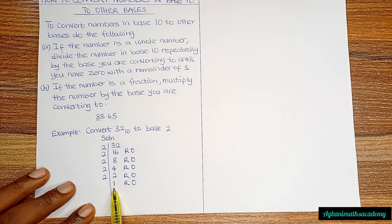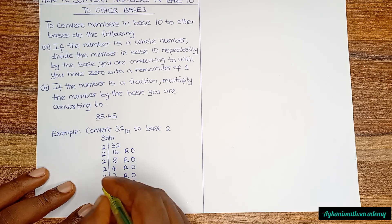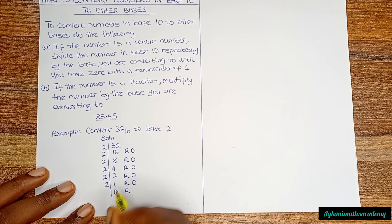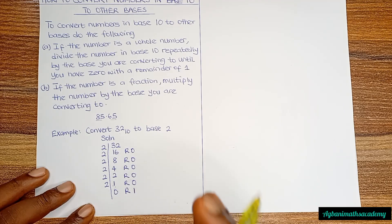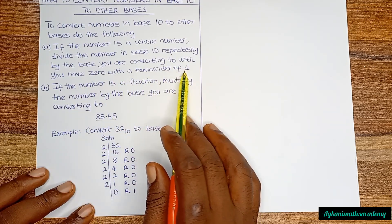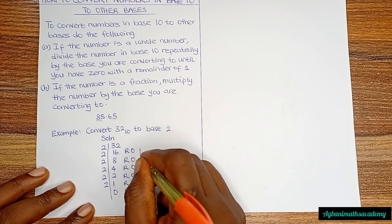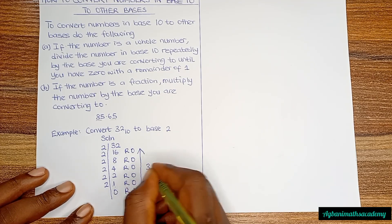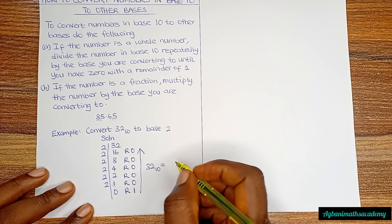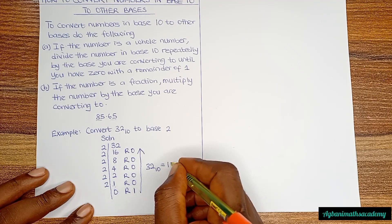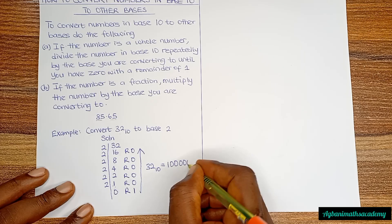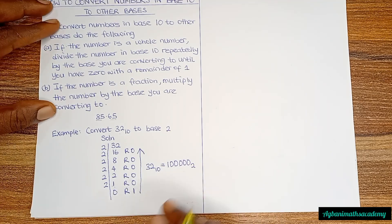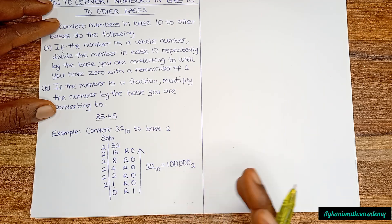We have not yet reached 0, so we divide 1 by 2. How many 2s are in 1? None — so we have 0, and the remainder is 1. We have now reached the final point: quotient 0 with remainder 1. The answer is written from bottom to top. So 32 base 10 equals 100000 base 2.